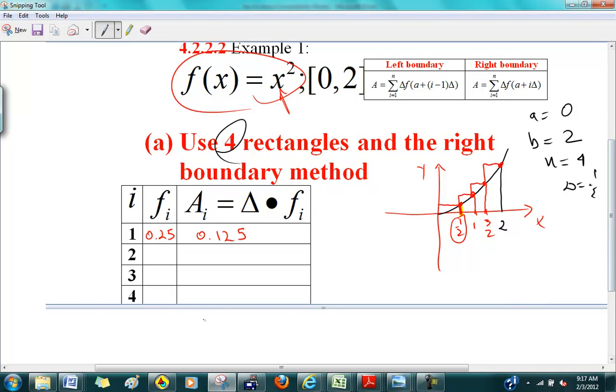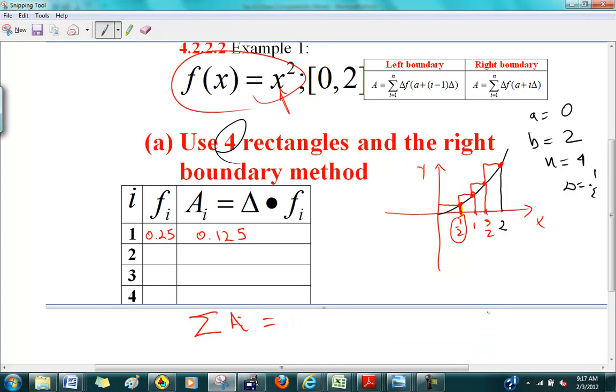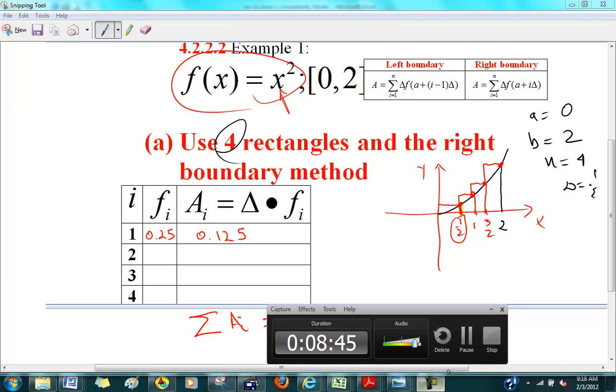All right, you guys fill in this table and do it. When you get it done, what I want you to do is add all the areas. What do you get? 3.75. Okay, everybody got 3.75?